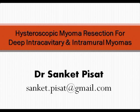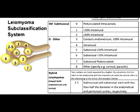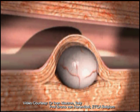Welcome to the video presentation of hysteroscopic myoma resection for deep submucous and intramural myomas. As per the new AAGL classification, myomas are classified from type 1 to type 7. Whereas resecting type 0 and type 1 myomas is easy, resecting type 2, 3 and 4 myomas is difficult due to the risk of perforation.